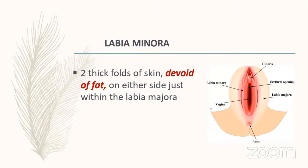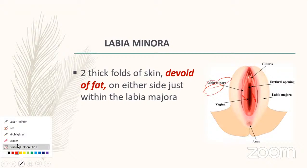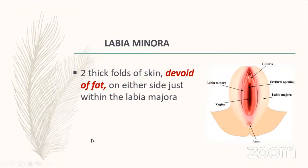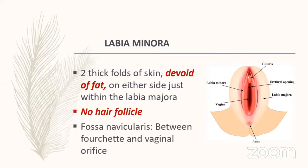Labia minora is devoid of fat. It lies just within the labia majora. Importantly, labia minora has no hair follicles — labia majora has hair follicles on its outer surface, but labia minora completely lacks them. There is also a structure called fossa navicularis, located between the fourchette and vaginal orifice.